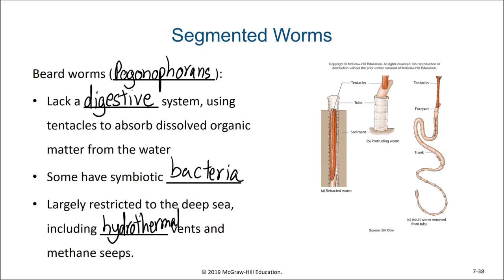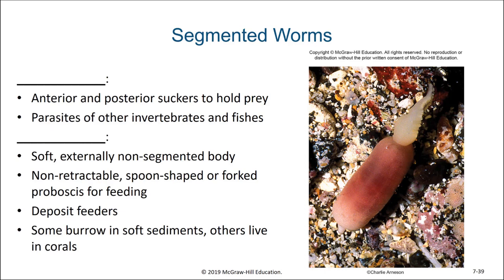Another group among the annelids are leeches. While leeches are more abundant in terrestrial aquatic environments, there are marine leeches as well. They have anterior and posterior suckers which allow them to hold onto prey, and they parasitize invertebrates and fish. Also shown is an interesting worm known as an echiuran. Echiurans are distinct in that they do not have clear external segmentation. They have a non-retractable spoon-shaped or forked proboscis for feeding. They are deposit feeders that often burrow in soft sediments, though some live in corals. The fat innkeeper worm of the Pacific Northwest is an example of an echiuran.